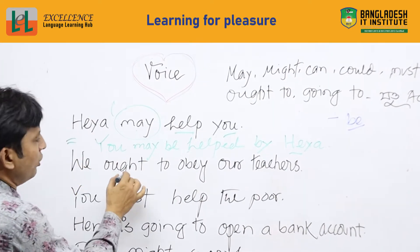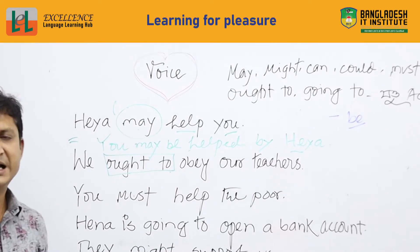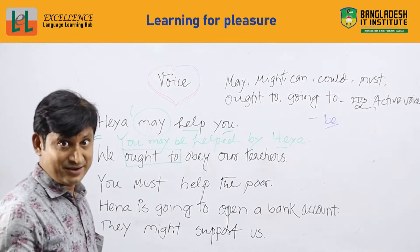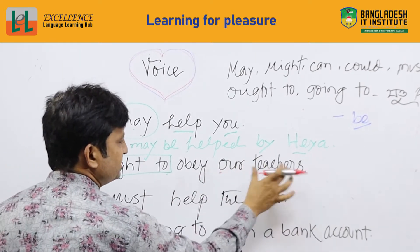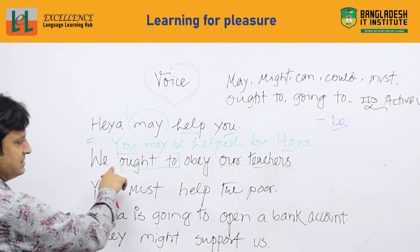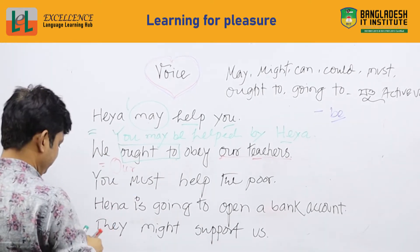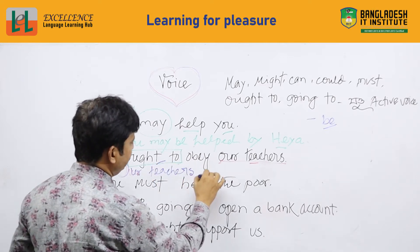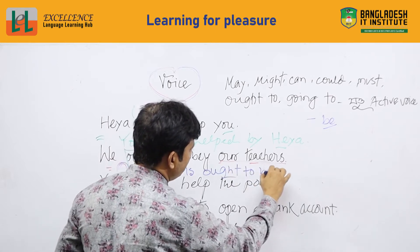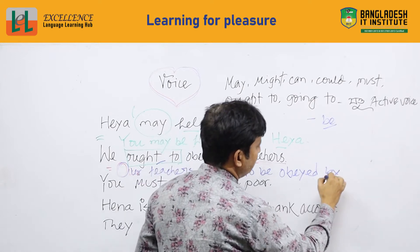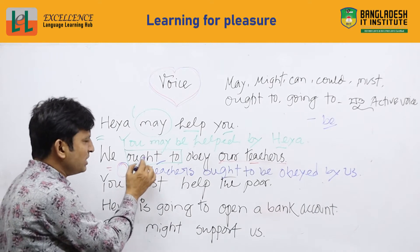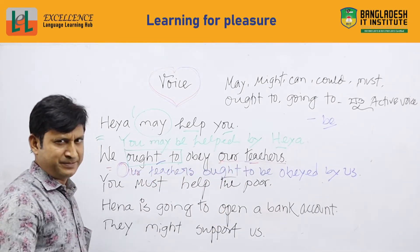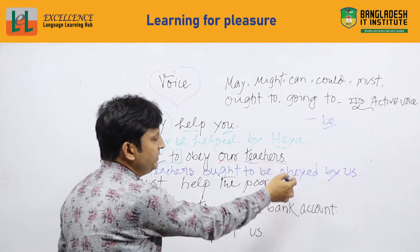The next one is 'ought to'. Sometimes we feel confused when we get 'to'. If we get 'ought to', we will write 'ought to be' in passive. So the example: 'Our teachers ought to be obeyed by us.' The object 'our teachers' becomes the subject, then 'ought to be', then 'obeyed', then 'by us'. Whenever we get 'ought to', we keep it and add 'be' to make it passive.